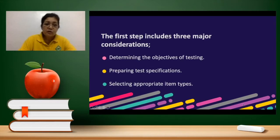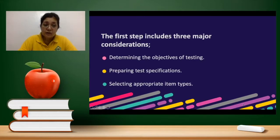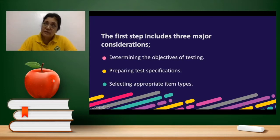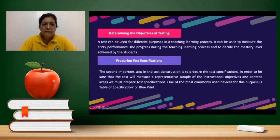The first step includes three major considerations. It is very important for us to determine the objectives of testing before preparing the test specification. Then you also have to select the appropriate type of test items that you have to include. In determining the objective of testing, you can have different purposes in the teaching-learning process.